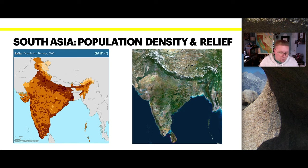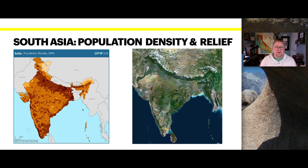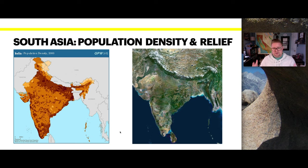Just beneath Nepal, agriculture is of dire importance to this realm, and people live near where they work. Since a lot of people are still dealing with agriculture, the density of population is very heavy in the north, and also for trade, business, and industry down to the south. We do see correlations with relief, resources, and where the density of the population will live.